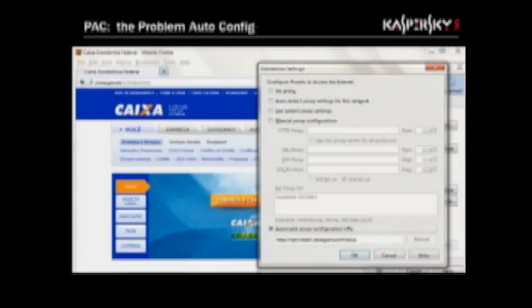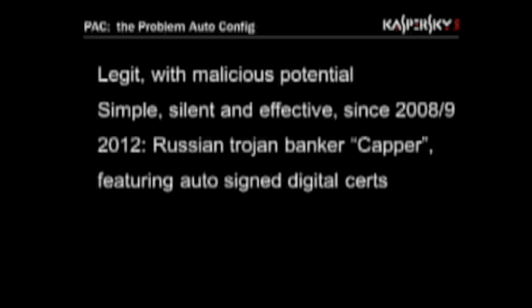As a result, when the infected user tries to access a banking page, they will be redirected to a phishing page. You can see in the Firefox settings box the malicious PAC file configured - in this case a .js file. This is a legitimate feature but with huge malicious potential. It is simple, silent, and very effective at infecting computers and redirecting to phishing pages. This has been happening in Brazil since 2008-2009 and is still widely used today.